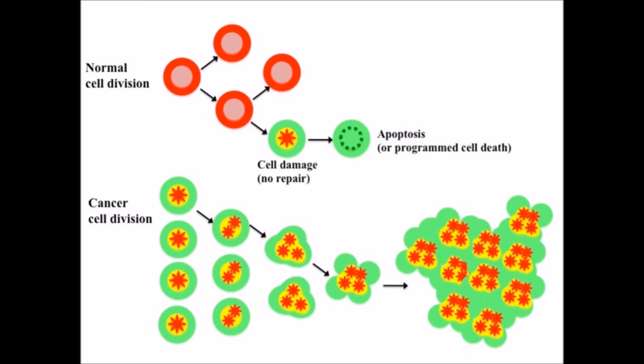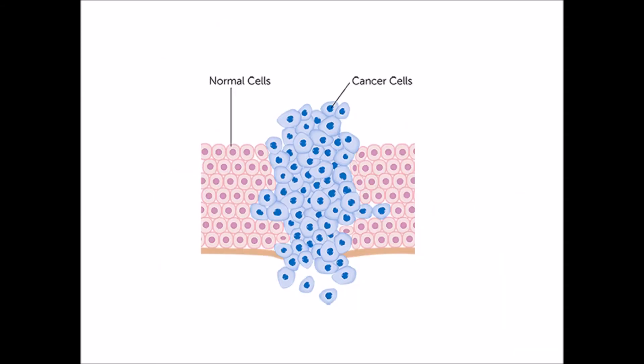Normally cell division takes place in a controlled fashion — the red cells are the normal cells. Sometimes if a cell is damaged, either it is repaired or it is killed. Here the green cells are the damaged cells, but if the damaged cell is not repaired or it is not killed, it goes on multiplying, forming cancer. So cancer is uncontrolled division of these bad cells.